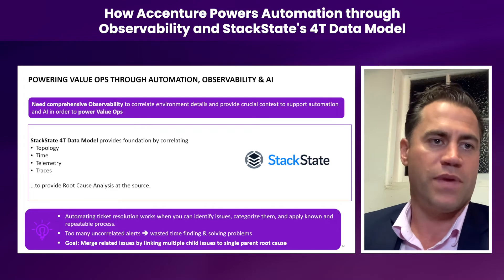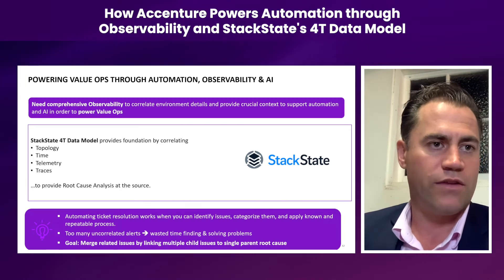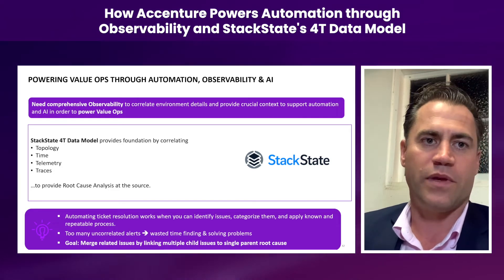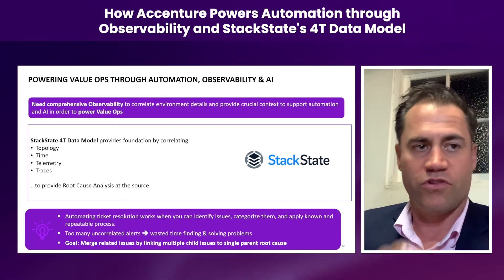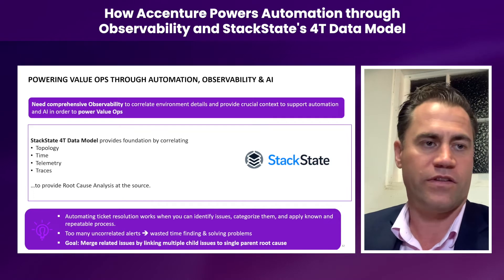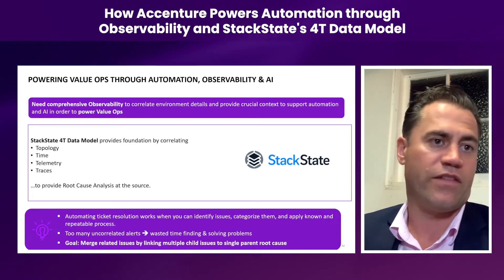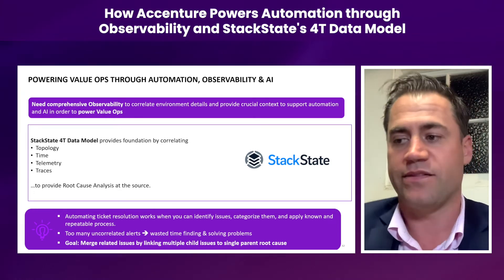Telemetry is really around the metrics — the health of our systems and the overlay of the temperature of those systems, so we understand exactly what's going on and what the trending information the system is telling us within the components of the topology. And then finally, tracing, which is critical because it focuses on the customer journey. It gives us the ability to overlay those customer journeys in combination with the other three dimensions: which steps in the topology does the customer pass through, at what point in time, and how the underlying services and infrastructure are performing within our cloud estates.